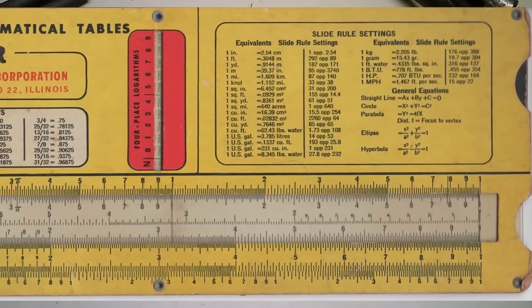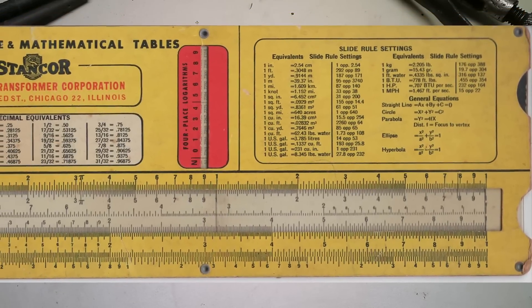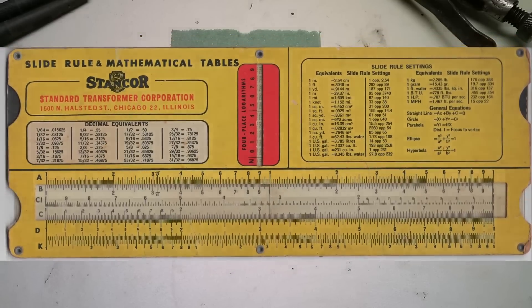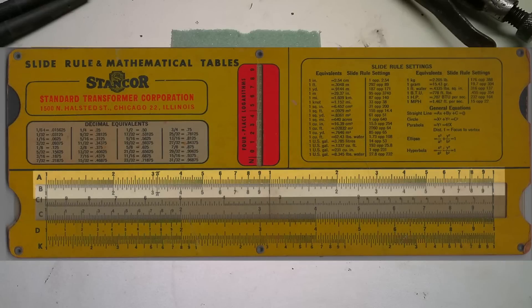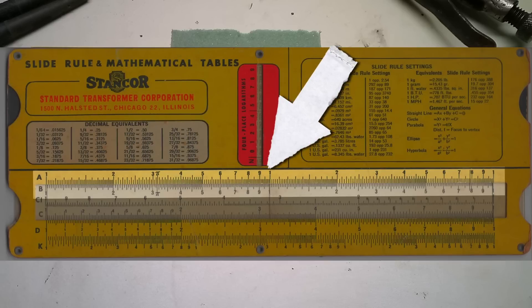Slide rules are basically analog calculators. This one has six scales on the front. The A and B scales are your coarse scales for doing square roots. These go from 1 to 10 and then all the way up to 100.